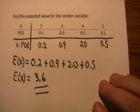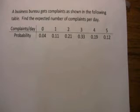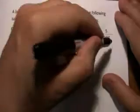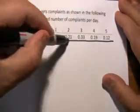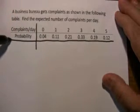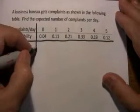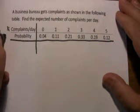So the expected value of that random variable is 3.6. A business bureau gets complaints as shown in the following table. Find the expected number of complaints per day. And they give you the PDF. This is very similar to the last problem, except the numbers are a little harder to deal with.